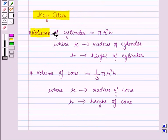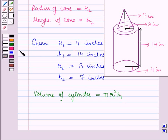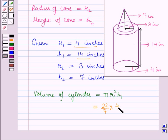By using the result given in the key idea, volume of cylinder is equal to π R1² H1, where R1 is the radius of the cylinder and H1 is the height of the cylinder. So putting the values of R1 and H1, volume of the cylinder is equal to π which is 22/7, into R1² which is 4 × 4, into H1 which is 14.